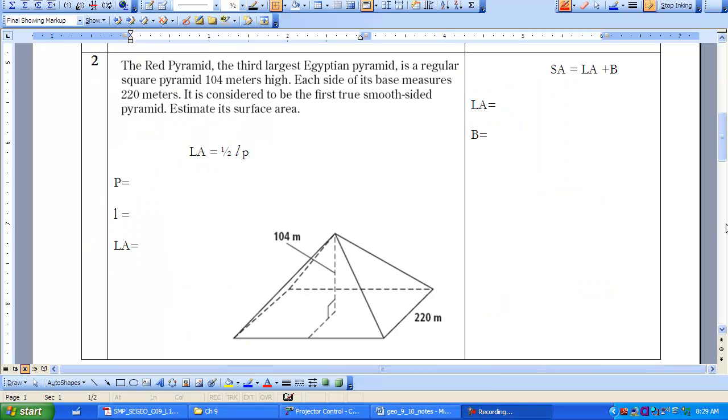Our next example involves a very large pyramid. It's the Red Pyramid. It's the third largest Egyptian pyramid. It's a regular square pyramid that's 104 meters high. Each side of its base measures 220 meters. And it is considered to be the first true smooth-sided pyramid. And we're going to try and estimate our surface area. When I say estimate, I mean we're going to do some rounding when it comes to dealing with pi and with our slant height.